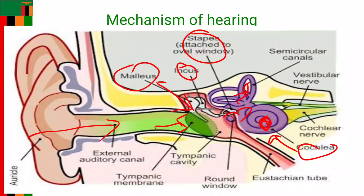Once the sound waves enter the inner part of the cochlea, this causes the hair cells inside the cochlea to move up and down. If you look at the microscopic structure of these hair cells, they have fine projections known as stereocilia found on top of the hair cells. It is these stereocilia that bend whenever sound waves move along them, causing pore-like channels at the tip of each stereocilia to open up. When this happens, chemicals rush into the hair cells, creating an electrical signal.